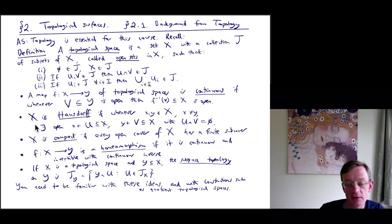A map F going between X and Y, two topological spaces, is called continuous if whenever V is an open set in Y, then the pullback F inverse of V is an open set in X.